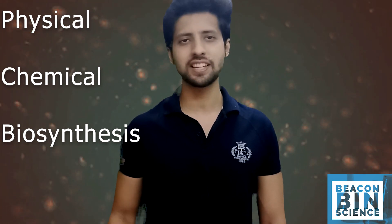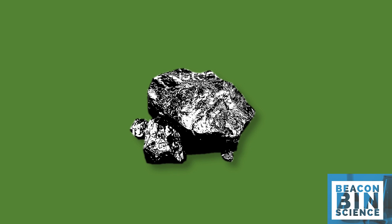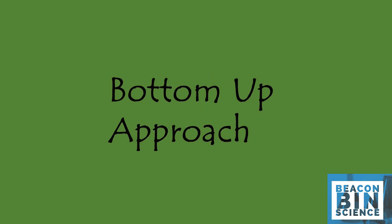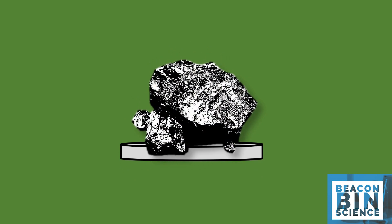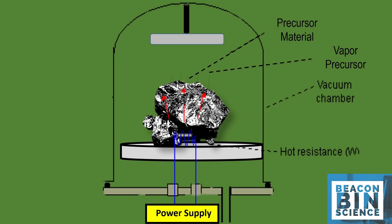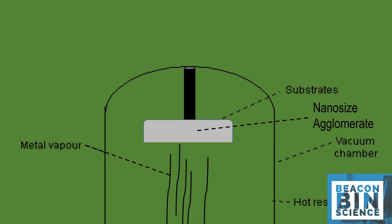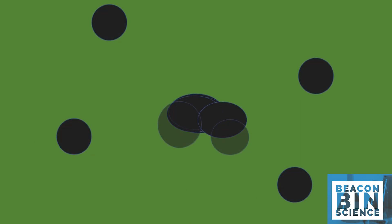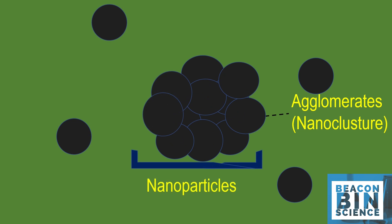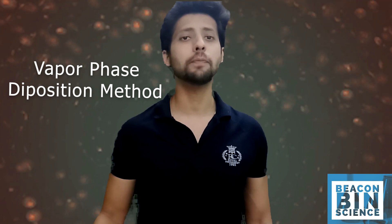Let's first focus on the physical approach. The journey of nanoparticle formation using the bottom-up approach starts with the evaporation of the starting material, which we call the precursor. The precursor converts into a vapor precursor in the next step. This vapor precursor gets deposited onto a surface called the substrate to form a primary particle. This primary particle then attracts other particles and forms an agglomerate — or in simple terms, particles collect in a group around the primary particle to form a nanocluster, a structure of nanosize. This is how we synthesize nanoparticles using the vapor phase deposition method.